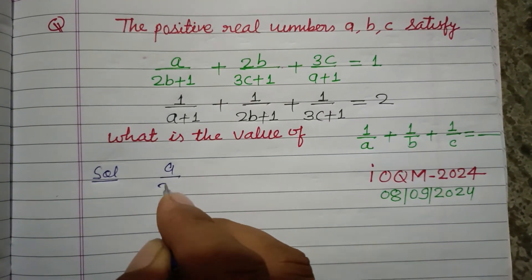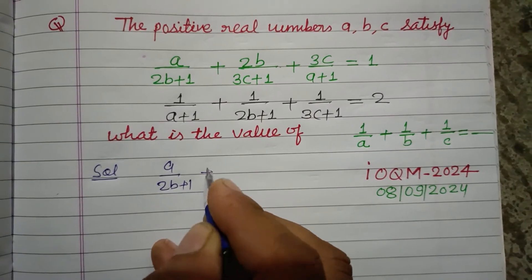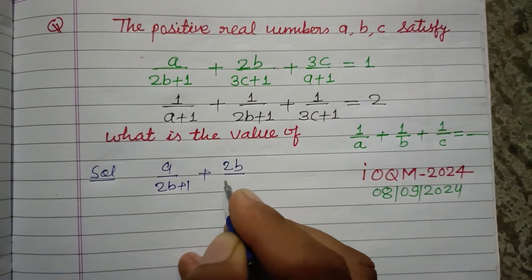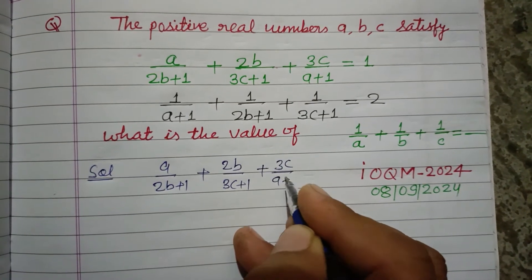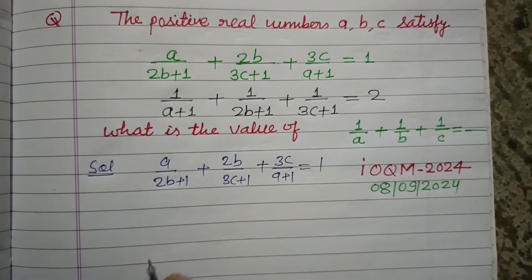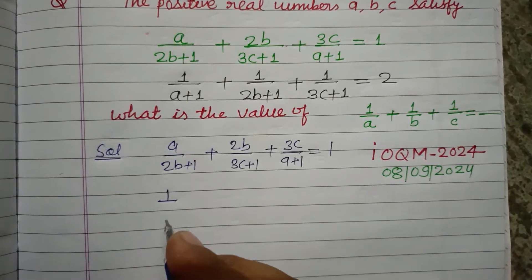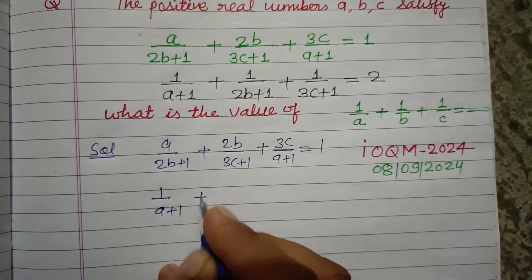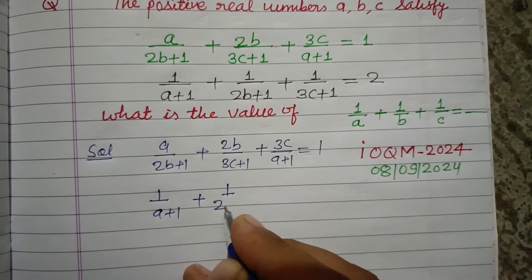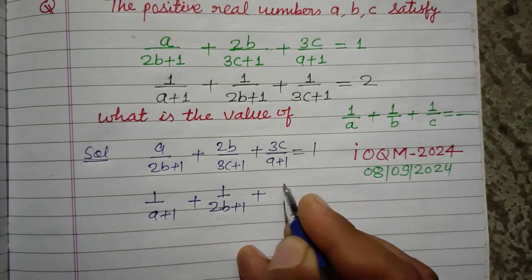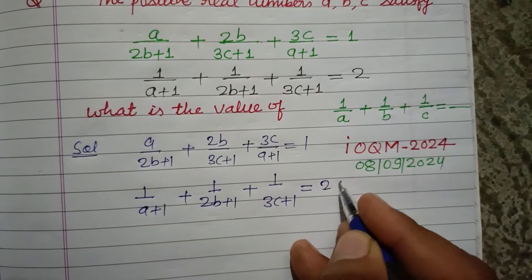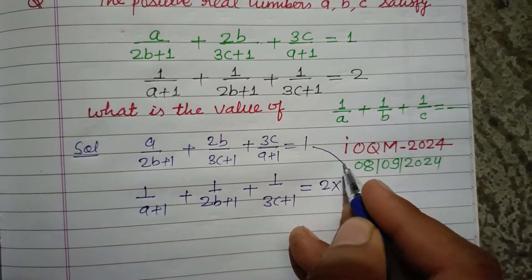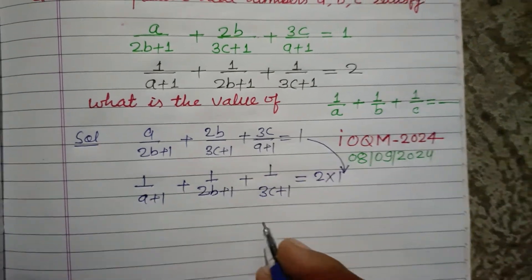Here we have a over 2b plus 1 plus 2b over 3c plus 1 plus 3c over a plus 1 equal to 1, and second equation is 1 upon a plus 1 plus 1 upon 2b plus 1 plus 1 upon 3c plus 1 equal to 2. We can write 2 as 2 into 1, and we put the value of 1 from the first equation.